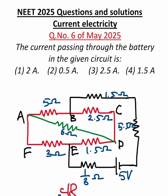Hello everyone, today let us see one more numerical asked in NEET 2025. The question goes like this: the current passing through the battery in the given circuit is, and they have given four options and this is the circuit.